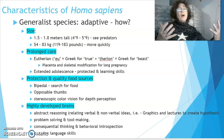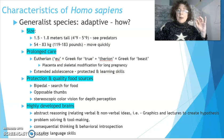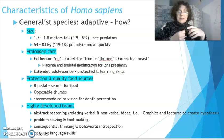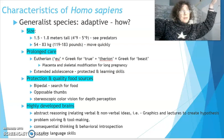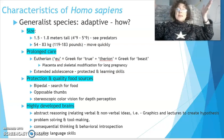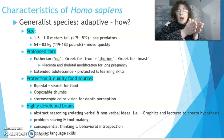We are known as a generalist species because we can generalize our experiences to adapt to many different environments. That generalization is based on four basic criteria: our size, our need for prolonged care through adolescence, our protective abilities, our search for quality food sources, and our highly developed brains that help us think in more abstract ways to solve problems. Our size allows us to stand above and see predators, while being small enough in mass to move quickly and escape them.